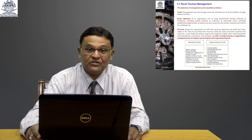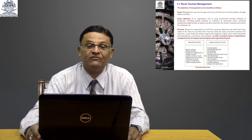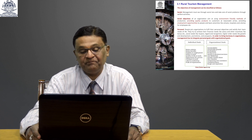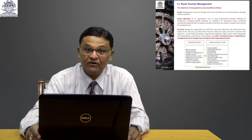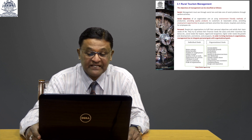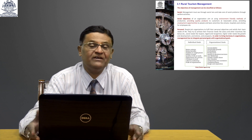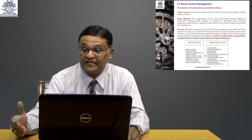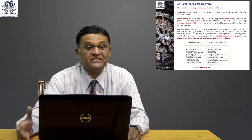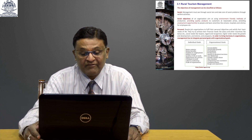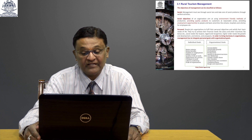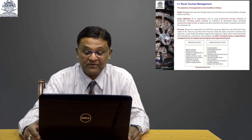Social objectives are very important — taking care of the employees working in the organization. Next come personal objectives. People join organizations to fulfill their personal objectives and satisfy their basic needs: survival, expansion of the family, taking care of elders and children, school-going kids, other expenses. They try to achieve financial needs like salary and bonuses, social needs like respect and recognition, and higher-order needs like growth, development, and promotions.